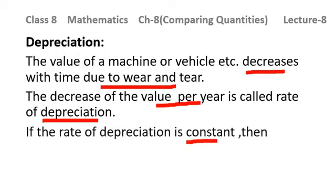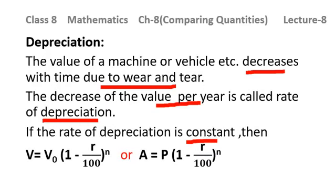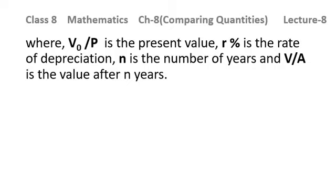If the rate of depreciation is constant, it is given by the formula V = V₀ × (1 − R/100)^N. The negative sign is because we are talking about decrease in value. Alternatively, A = P × (1 − R/100)^N. Here V₀ or P is the present value of the machine, R% is the rate of depreciation, N is the number of years, and V or A is the value after N years.